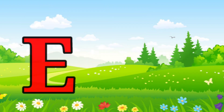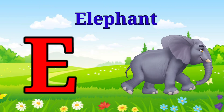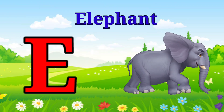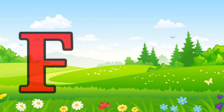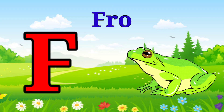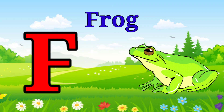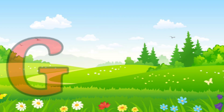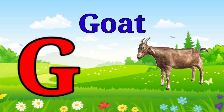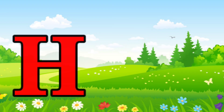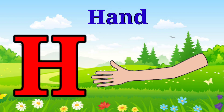E is for elephant, e-e-elephant. F is for frog, f-f-frog. G is for goat, g-g-goat. H is for hand, h-h-hand.